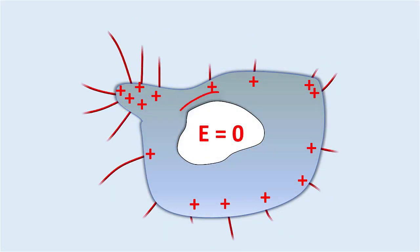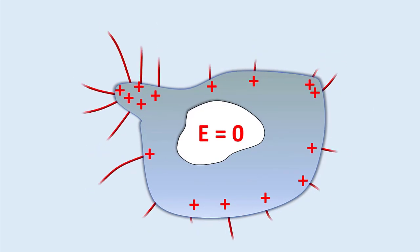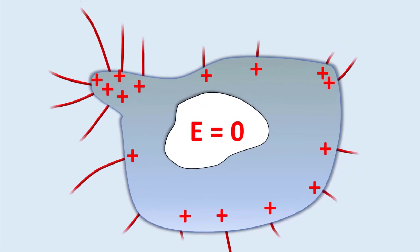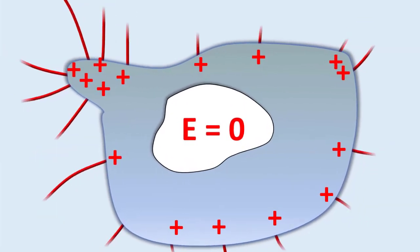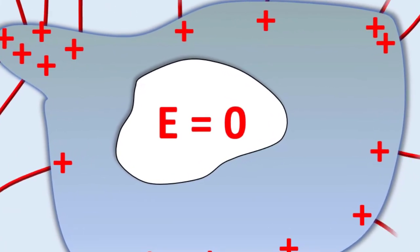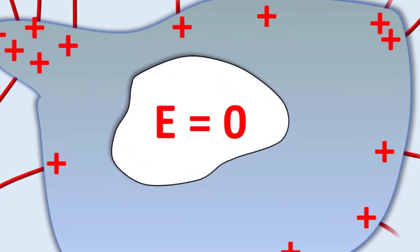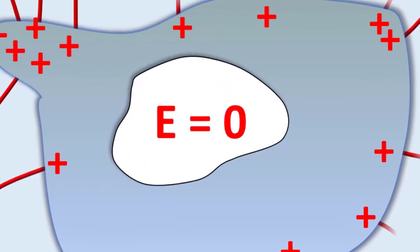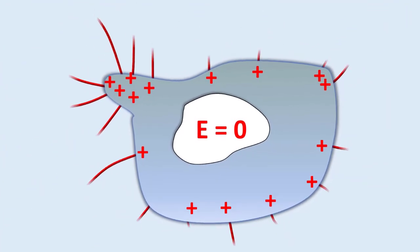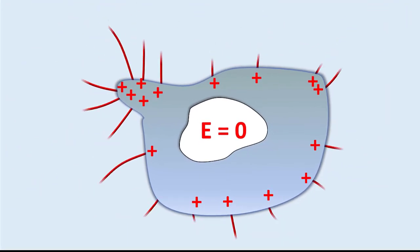Consider a cavity inside the conductor as shown here. Whatever the charges at the surface, and whatever the electrical disturbance outside, the electrical field inside the cavity is zero. This is called electrostatic shielding.